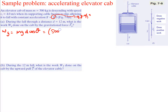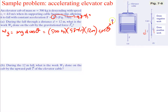Plugging everything in: mass is 500 kilograms, gravity is 9.8 meters per second squared, displacement is 12 meters, times cosine of the angle. The angle is zero because gravity is pulling down and the displacement is down — they're in the same direction, so cosine of zero is just 1. The work due to gravity is 5.88 times 10 to the fourth joules.